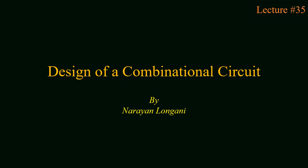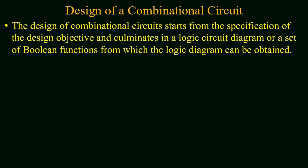Hello everyone and welcome back to the series of digital logic design. Today we will study how to design a combinational circuit. The design of combinational circuit starts from the specification of the design objective and culminates in a logical circuit diagram or a set of boolean functions from which the logic diagram can be obtained. If you have a design problem, you have to read the problem statement and extract the specification of the circuit, then following the procedure steps you will end up with the boolean function or the logical diagram for the given problem.